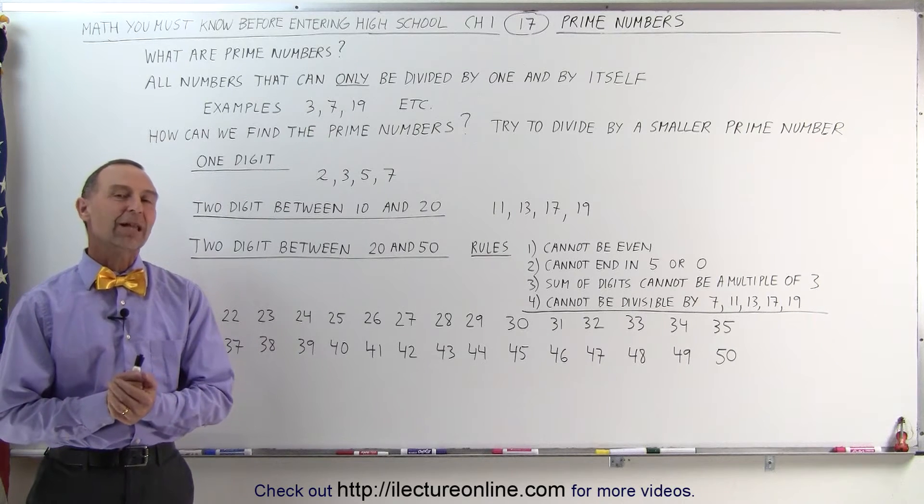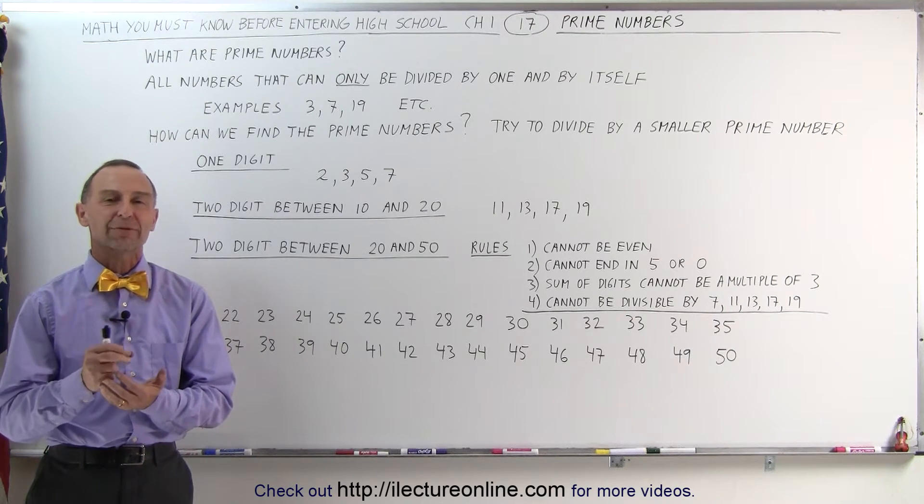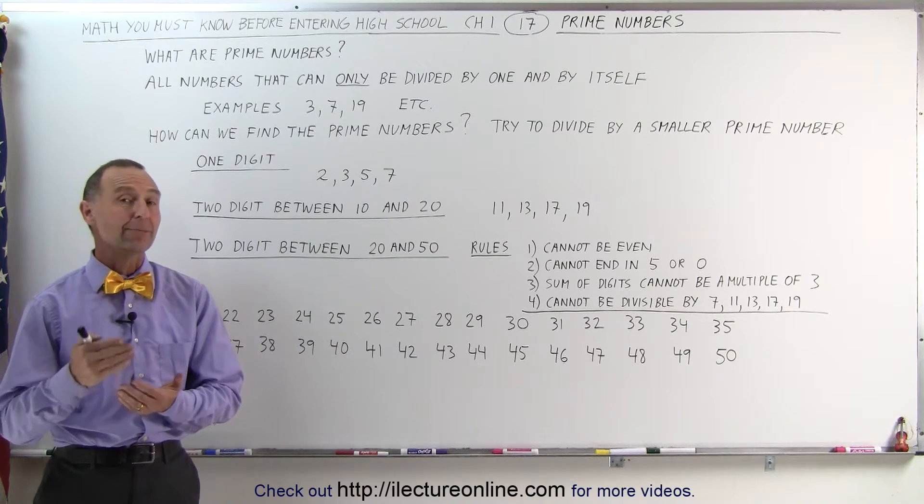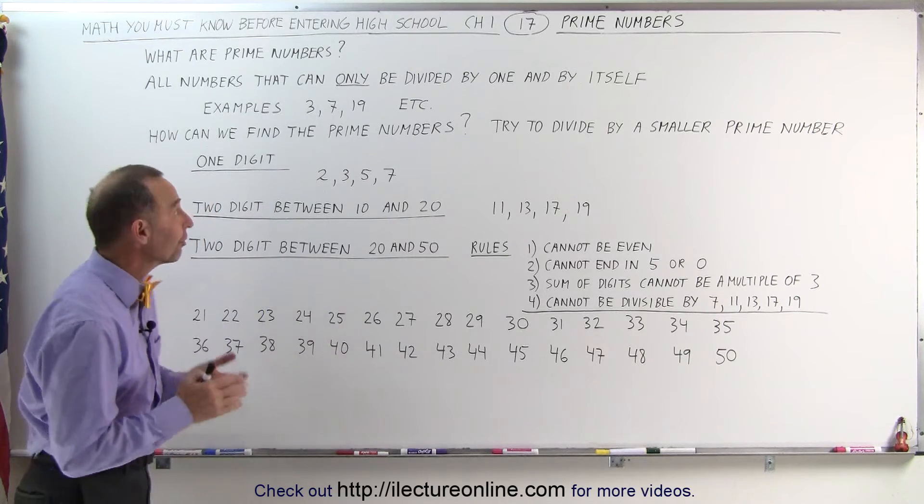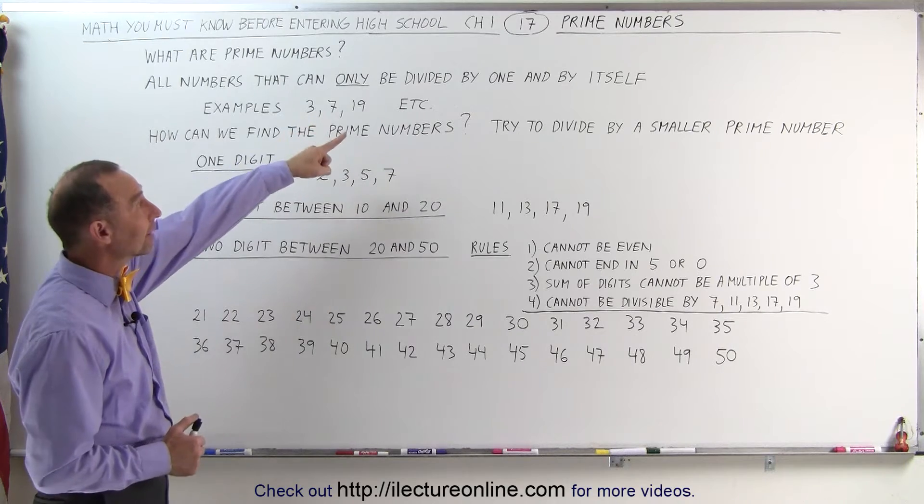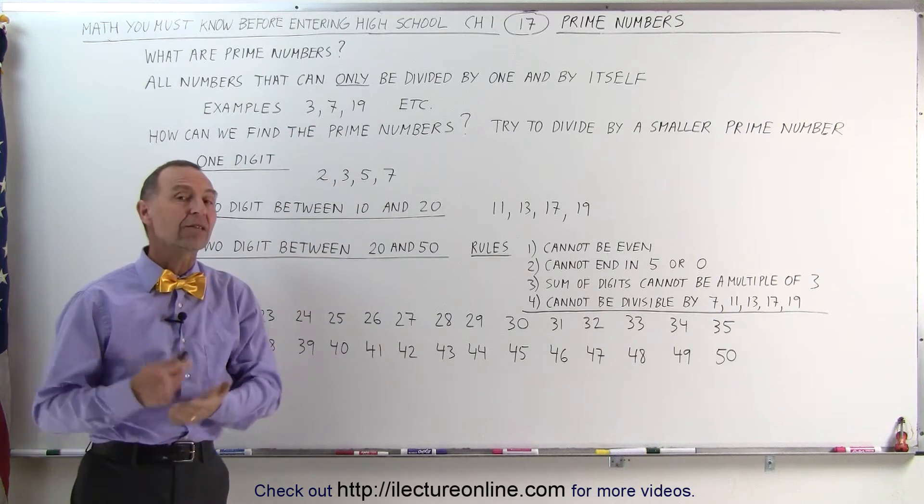Welcome to our lecture online. Now let's talk about a special type of counting number called the prime numbers. Prime numbers are defined as numbers that can only be divided by the number 1 and by itself.